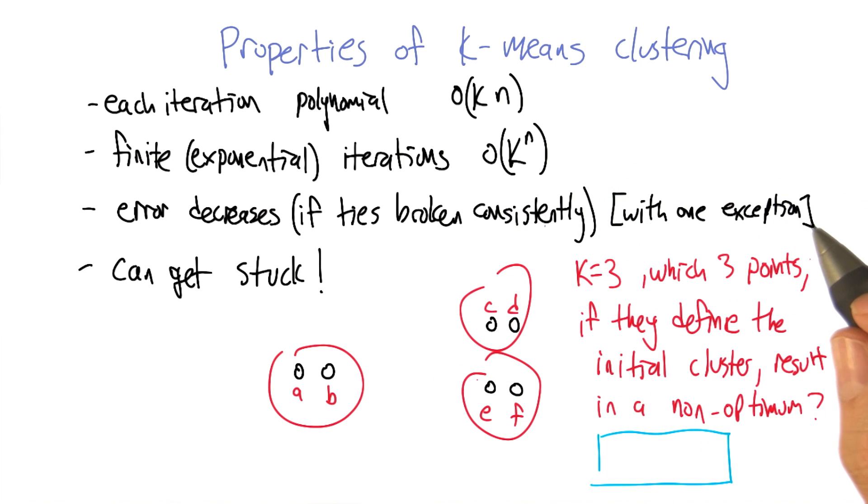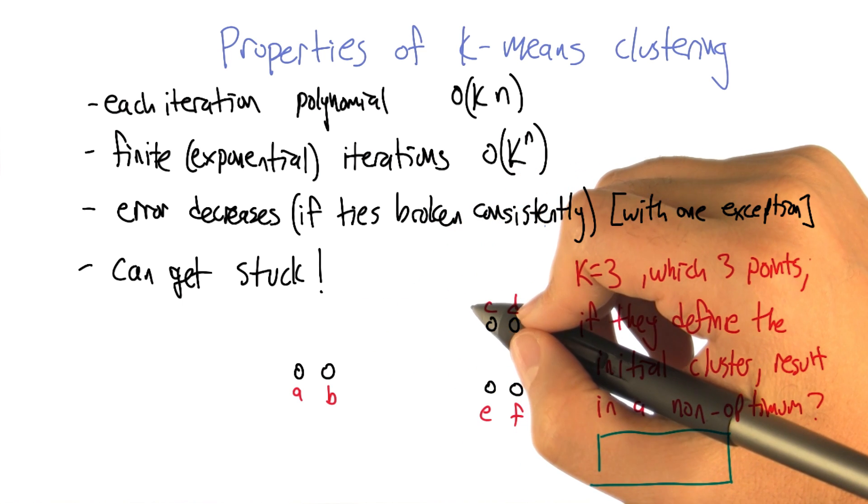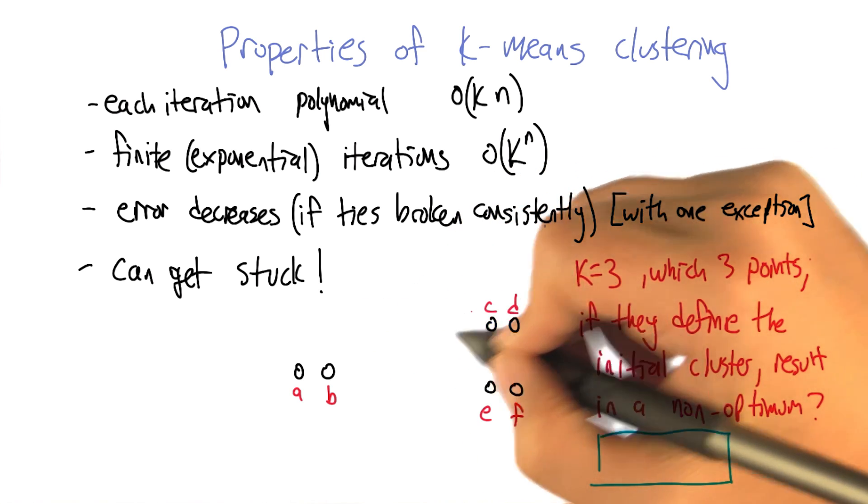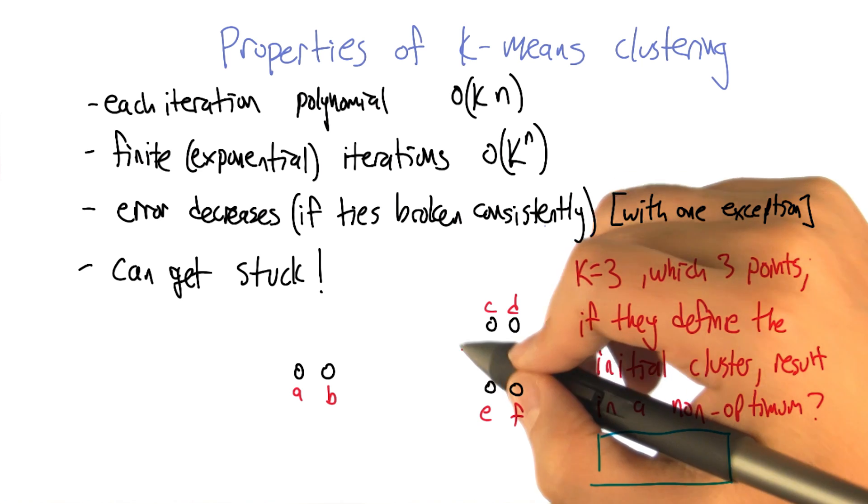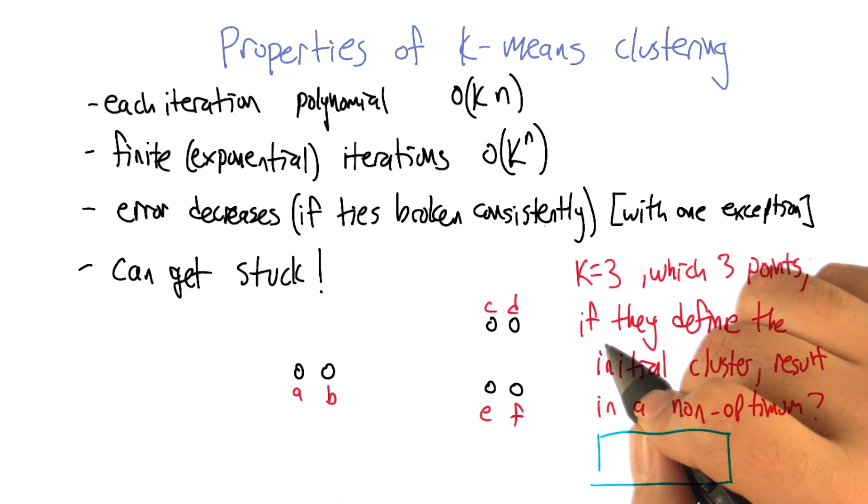Indeed. So that is the optimum here. So the question is, write down a way of assigning the three cluster centers to points so that it will be stuck there and not get to the clustering that you just found.